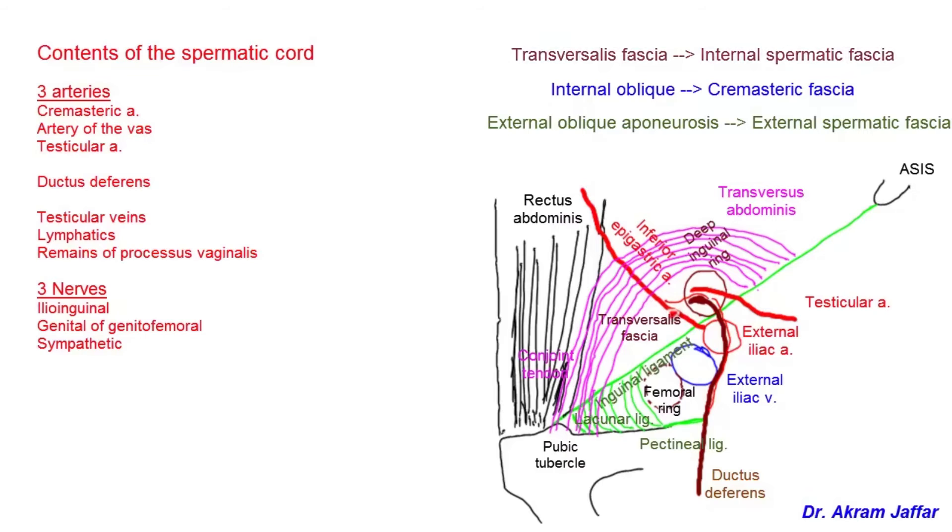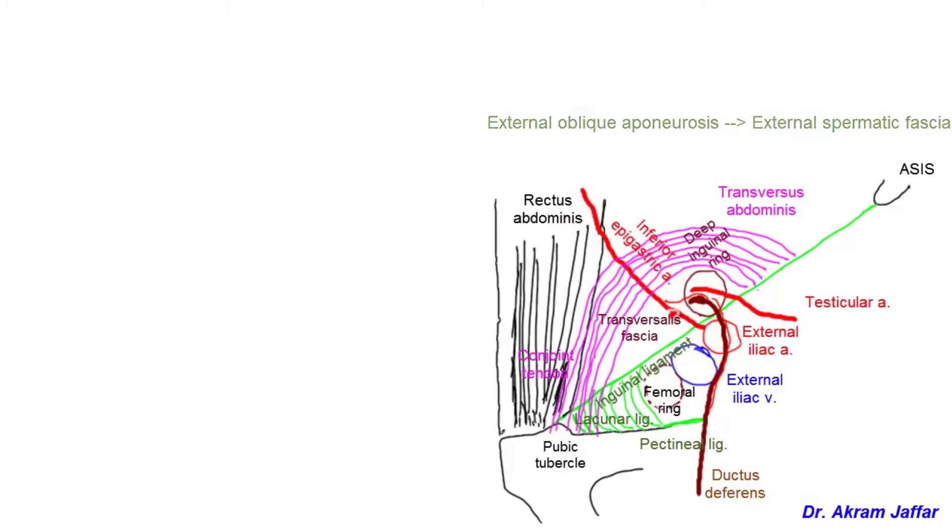An important point to show here in relation to the femoral ring is the pubic branch of the inferior epigastric artery. This pubic branch passes in relation to the femoral ring and the lacunar ligament toward the superior ramus of the pubis.